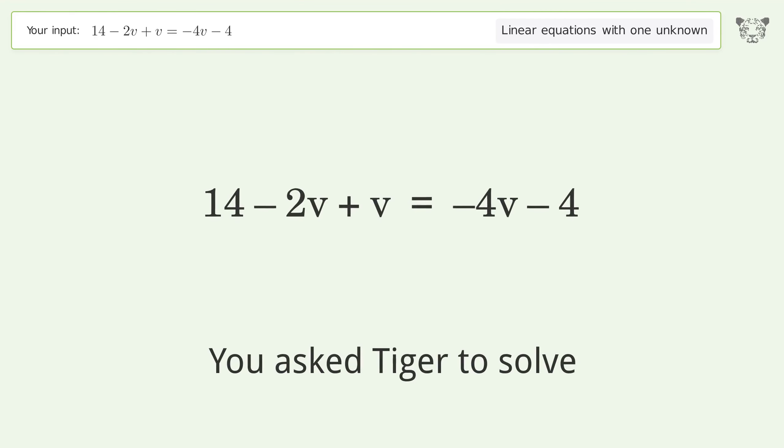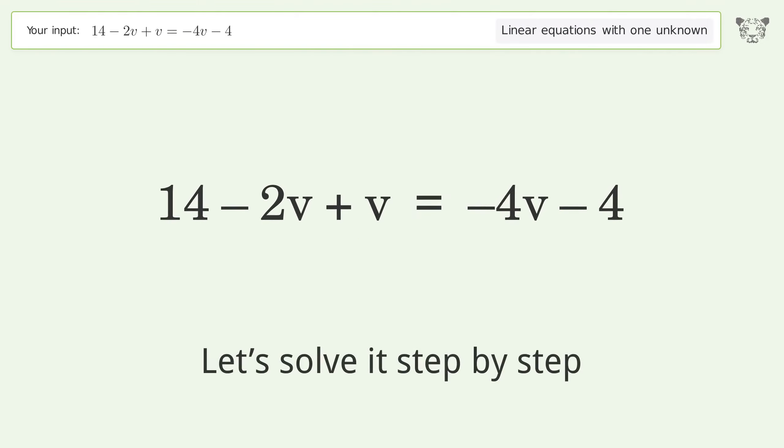You asked Tiger to solve this linear equation with one unknown. The final result is v equals negative 6. Let's solve it step by step. Simplify the expression, group like terms.